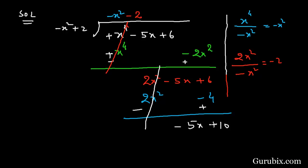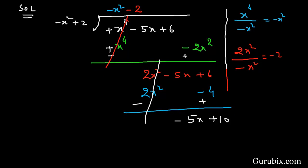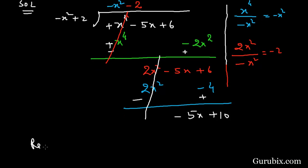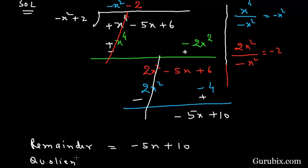We cannot divide further because the degree of the divisor is higher than the degree of the remainder. The degree of the divisor is 2 and the degree of the remainder is 1, so we stop the division process here. Therefore, the remainder is minus 5x plus 10, and the quotient is minus x squared minus 2. This is the solution of the question. Thank you.